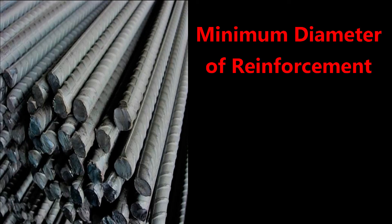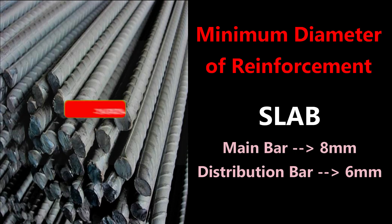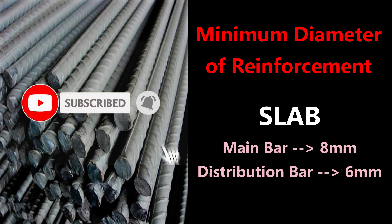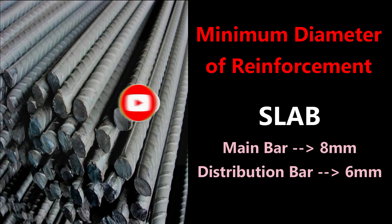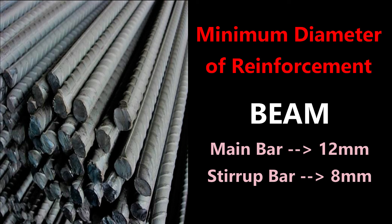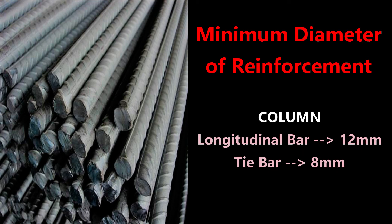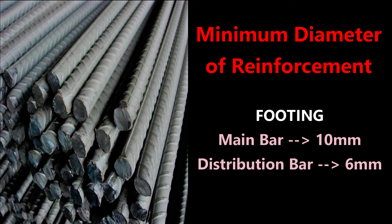The minimum diameter of reinforcement: for slab, minimum main bar diameter is 8 mm and distribution bar is 6 mm. For beam, minimum main bar diameter is 12 mm and stirrup bars are 8 mm. For column, minimum longitudinal bar diameter is 12 mm and tie bars are 8 mm. For footing, minimum main bar diameter is 10 mm and distribution bar is 6 mm.